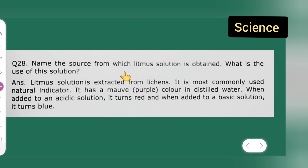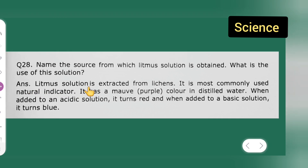The answer is right over here. Litmus solution is extracted from lichens. It is the most commonly used natural indicator.